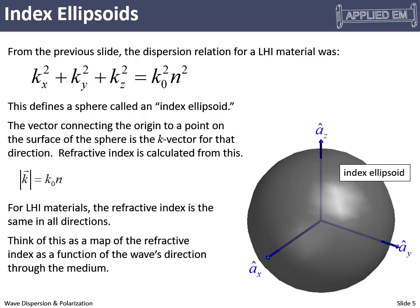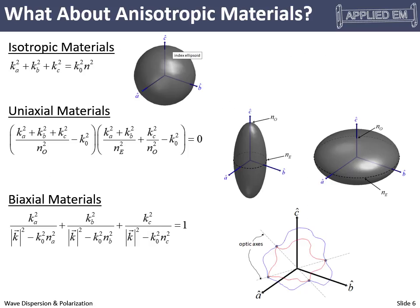If it's a sphere, no matter what direction the wave is going, it sees the same refractive index. But in different materials that can be very different. In isotropic materials we have nice spherical index ellipsoids, but in anisotropic materials these can take on different shapes. There are uniaxial materials where index ellipsoids are actually ellipses, and biaxial materials with equally strange index ellipsoids. As a wave changes direction, it can see a different refractive index — and in fact it can see multiple refractive indices at the same time.